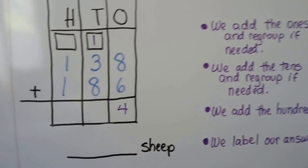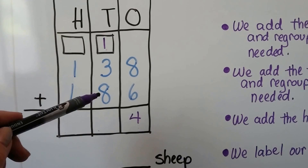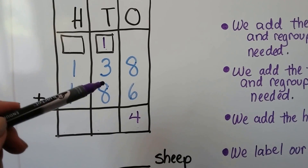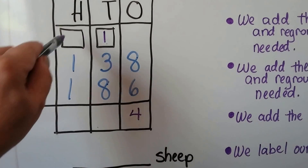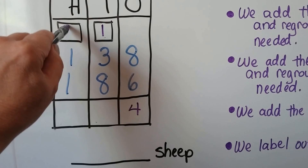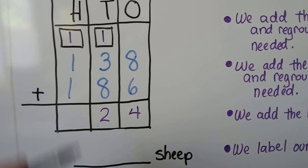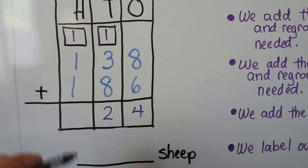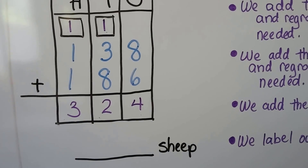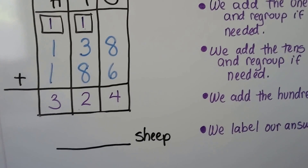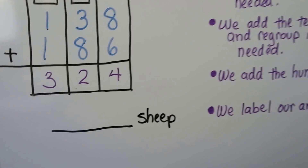We add the tens and regroup if needed. We start with the large number 8 and then count up to 12. We regroup the 1 and put the 2 from the 12 down here, and now we just add the hundreds: 1, 2, 3. That gives us 324 and we make sure we label our answer.